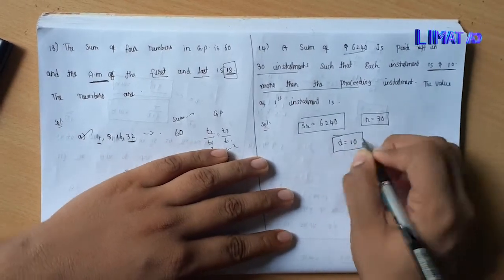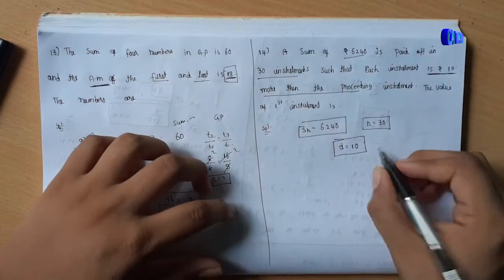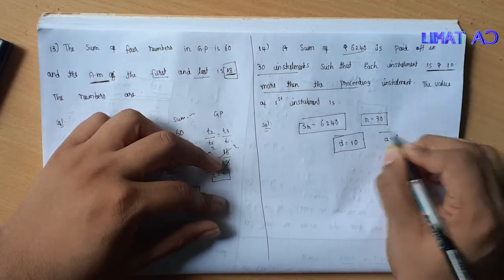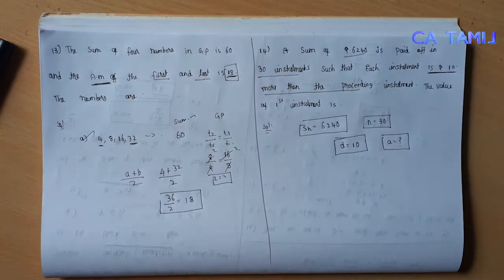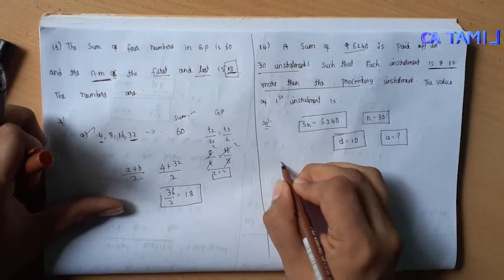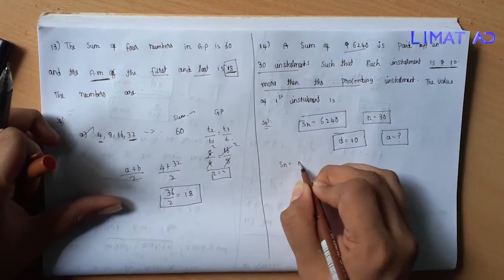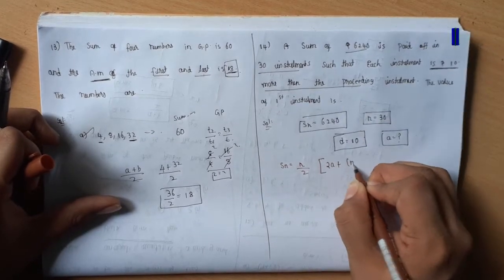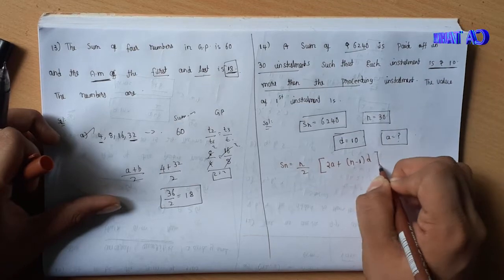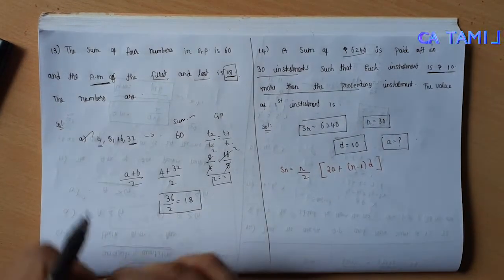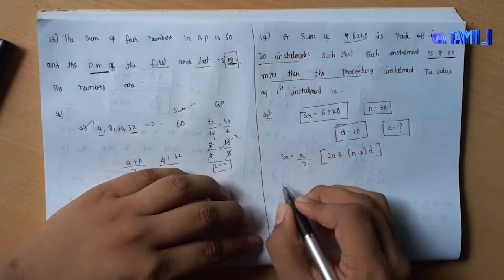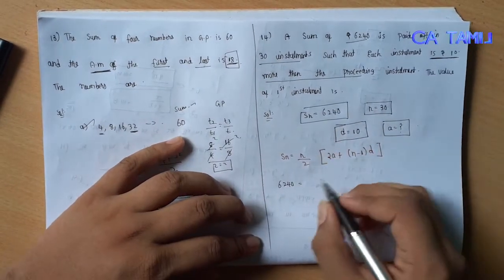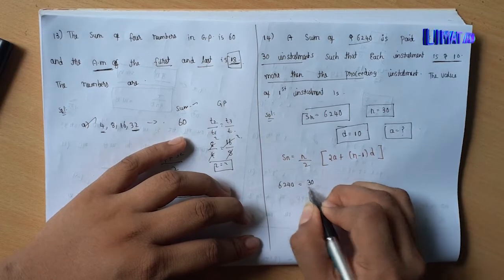The first value is a. We know the formula for sum of AP: S equals n by 2 into 2a plus n minus 1 into d. We substitute: 6240 equals 30 divided by 2 into 2a plus 29 into 10.